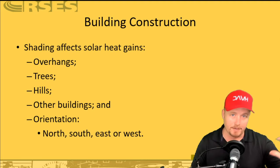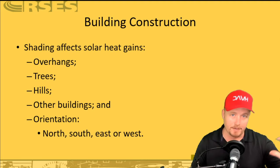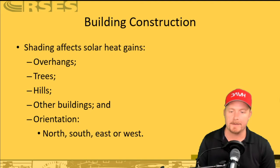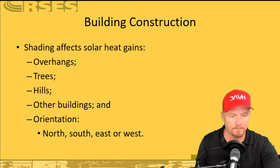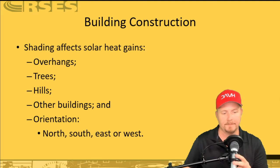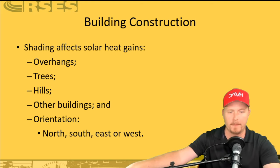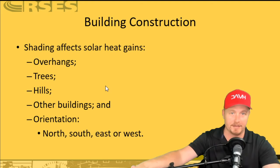Building construction makes a big difference. We're talking about human comfort — this is building science, but specifically building science for air conditioning professionals. You don't design air conditioning systems based on rules of thumb. When I'm telling you the things that impact heat gain and heat loss from a building, I'm not telling you that you should try to compensate for that just on the fly. You do that through proper design, but understanding the different factors that can impact a building does help.